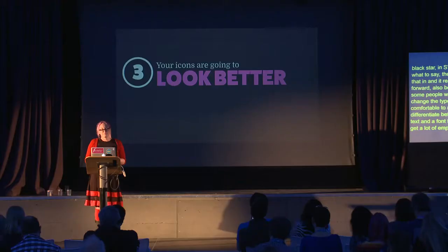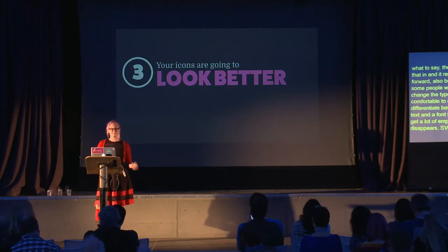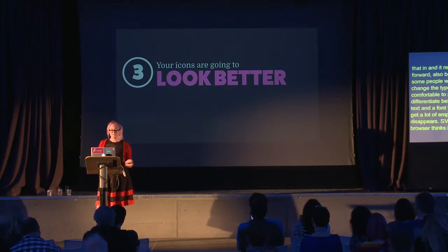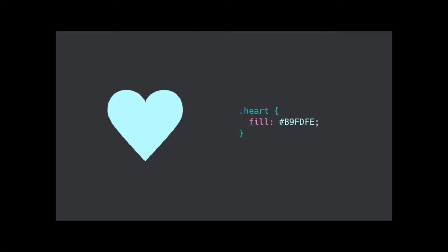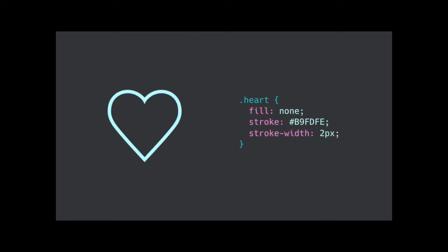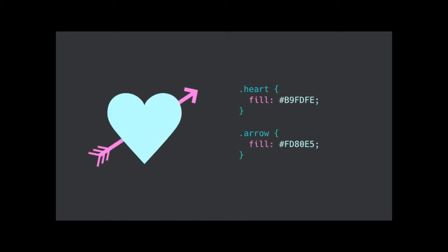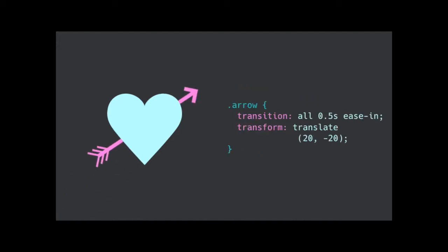SVG looks better. Because the browser thinks it's an image and treats it like an image, it doesn't do any weird font rendering. You won't have your icon rendering at a slightly stronger weight in Firefox than in other browsers. There's no anti-aliasing. You can position it in a less fiddly way because you don't have to worry about line height, letter spacing, or kerning. You can also control it better with CSS — change the color, add a stroke and change the stroke width, select different elements individually and color them differently, and you can animate them.